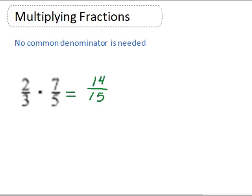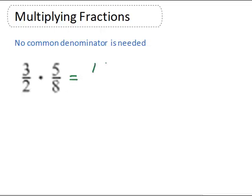Here's our next example: 3/2 times 5/8. Again we multiply straight across. 3 times 5 is 15 and 2 times 8 is 16. 15 and 16 don't have any common factors, so we are done.